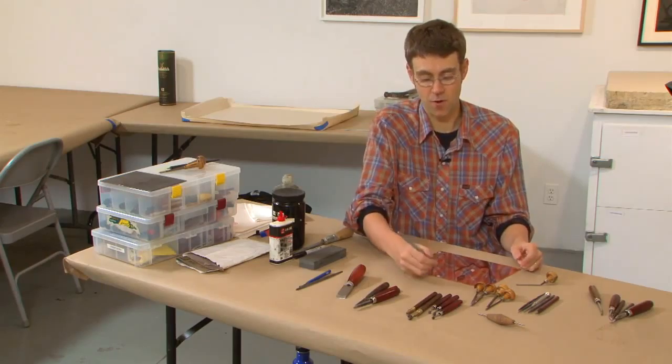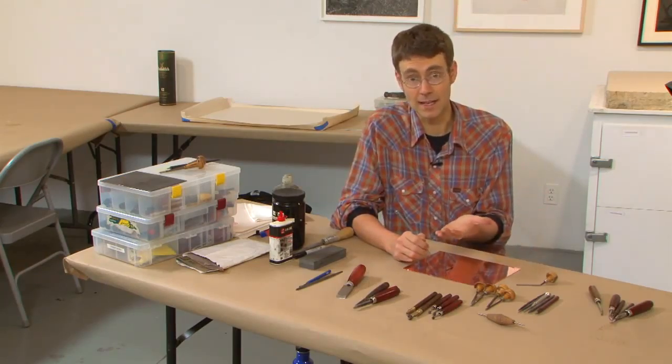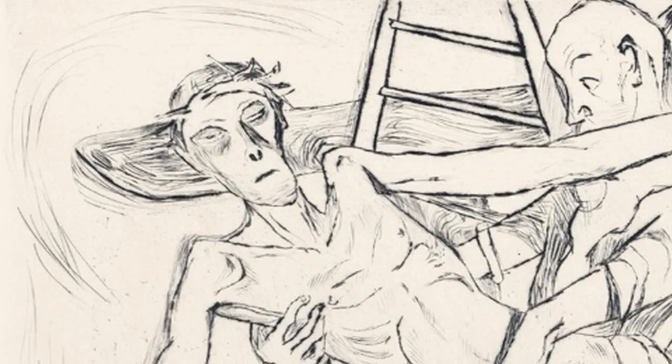The burr that is raised from moving that metal holds ink, and where that ink is held creates a fuzzy line, which is the characteristic line for a dry point.